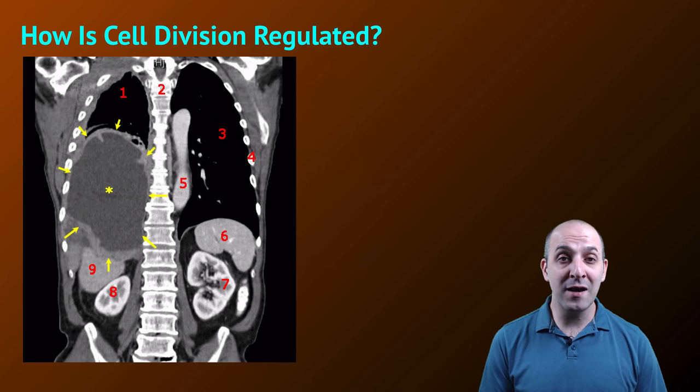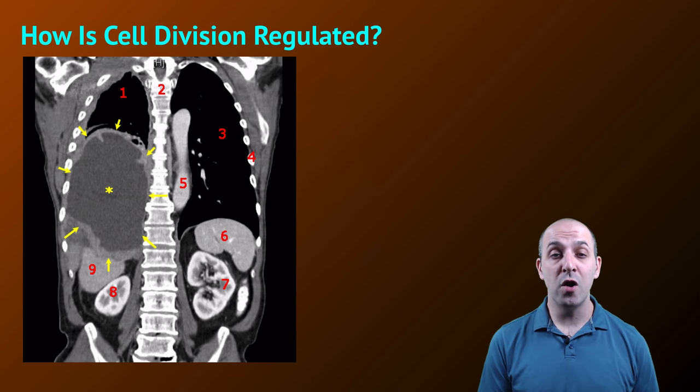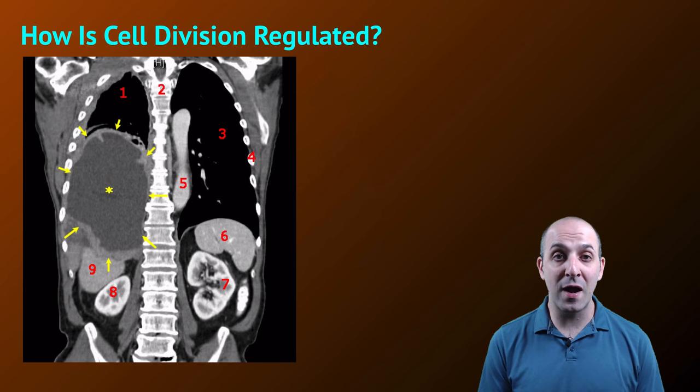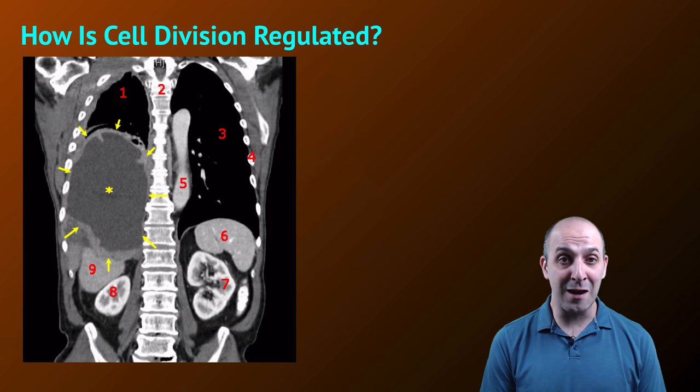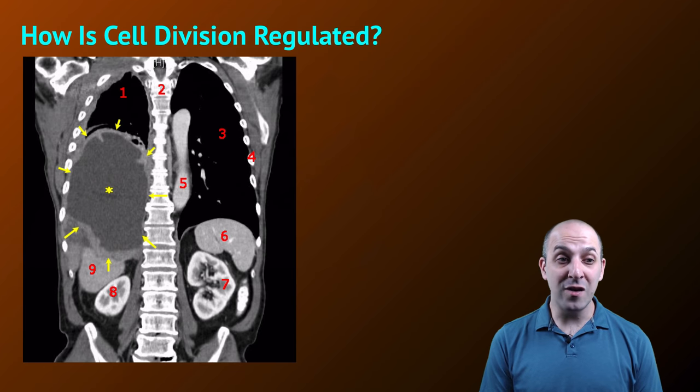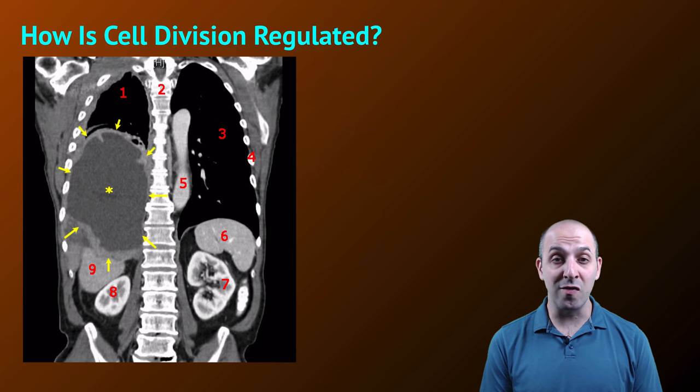And in case we need a reminder, it's incredibly important for living systems to be able to regulate cell division, particularly if they're multicellular. Unregulated cell division has a name, it's what we call cancer, and you can see it in this image as the big yellow mass or this tumor in this lung cancer patient.